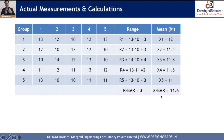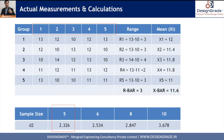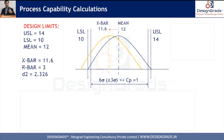There is an important constant called d2, which is required to calculate standard deviation. It depends on the number of measurements in each group. Since each group has 5 measurements (n = 5), we look up this value in the d2 table and find d2 = 2.326. So we have: X-bar = 11.6, R-bar = 3, and d2 = 2.326.